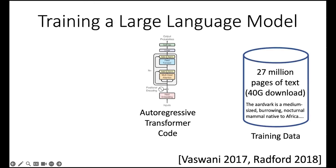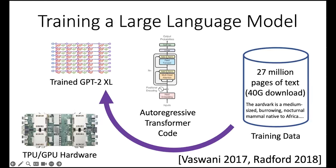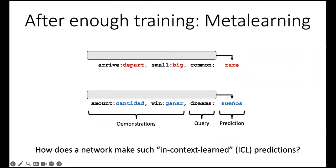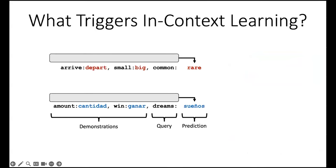This course is supposed to be about transformers and large language models, so let's take a look at an example. I think this is GPT-2 XL — actually, a lot of the experiments I'm going to show you are for larger models. We have this situation where GPT models are trained unsupervised on a lot of text and we're not really sure what they're doing. After enough training, we get things like meta-learning where you just give these demonstrations and it can make these predictions. So let's ask the question: how does the network make in-context learning predictions?